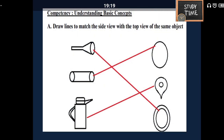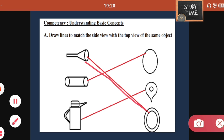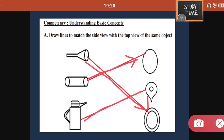Draw lines to match the side view with the top view of the same object. A few objects are given on the left-hand side, and the top view of the same object is given on the right-hand side — you are going to match them. The first object is a funnel; when you look from the top view it will look like this. Next is a pipe-like structure; when you look from the top it will be like a circle. Next is a flask-like object; when you look from the top it will look like this.